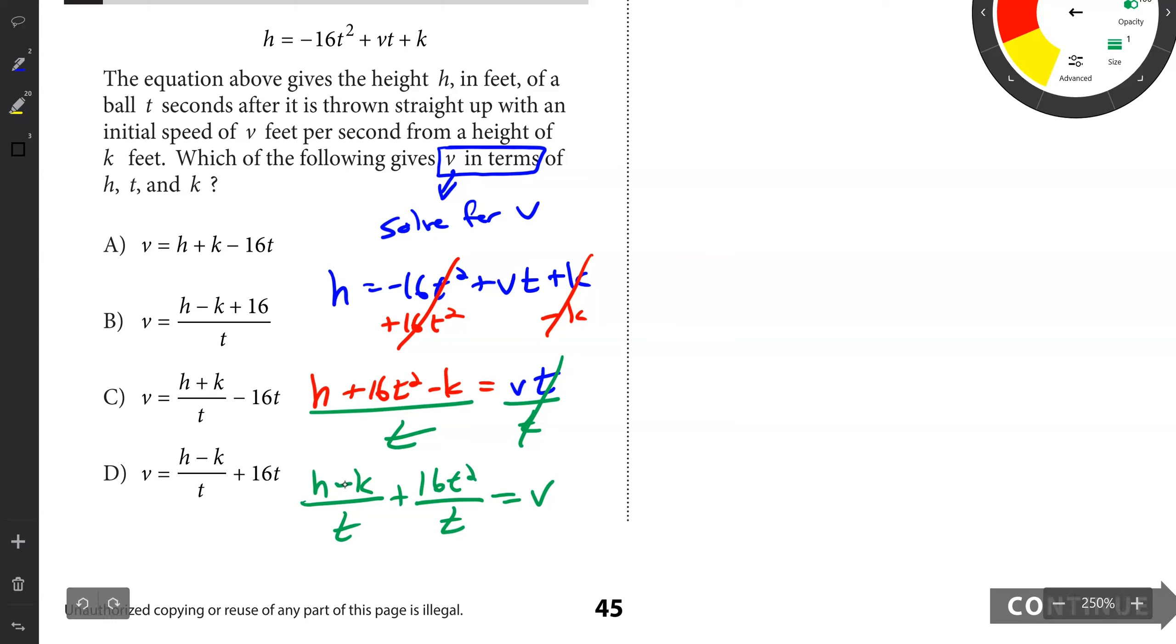I can do H minus K over T. I'm splitting this now, 16T squared over T. It's a property of fractions, you can split them into multiple fractions. And this equals V. The reason I would do that is because these T's reduce. I would only do this because how else would I see the answer? We had to do some more algebra work to get the solution, which was actually letter D.